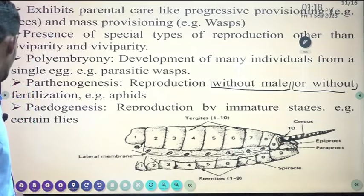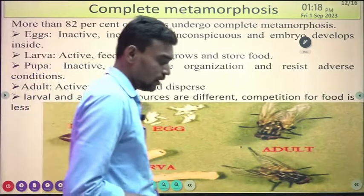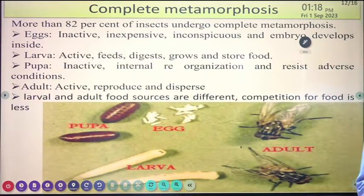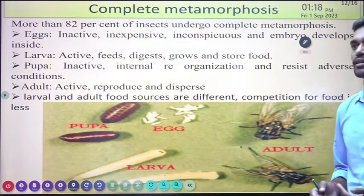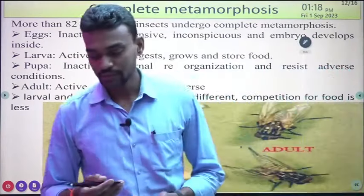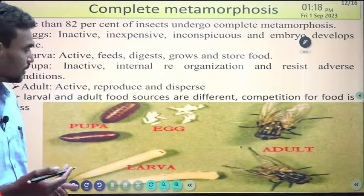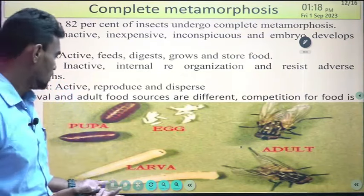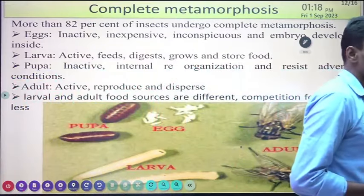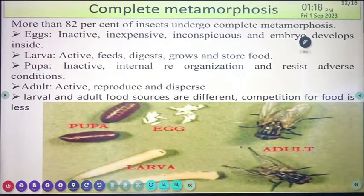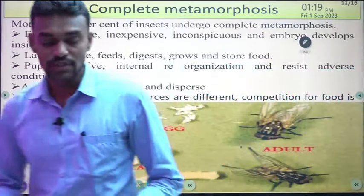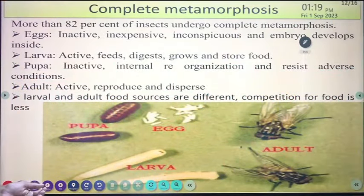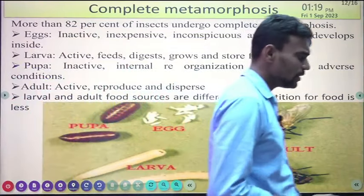Insects also undergo complete metamorphosis, starting their life cycle from egg, then passing through various larval stages, then pupation, and finally hatching into the adult stage. This mechanism of complete metamorphosis and their ability to transform themselves through their life cycle is another reason they are dominated in the environment.